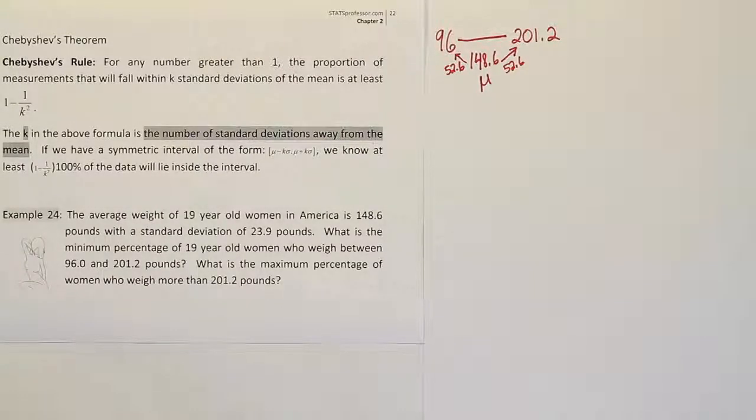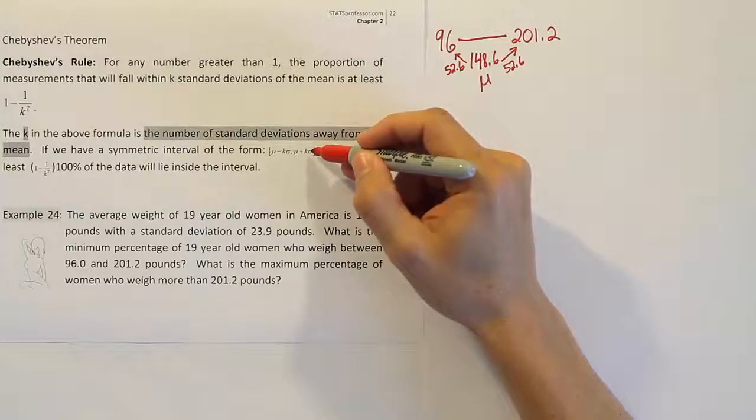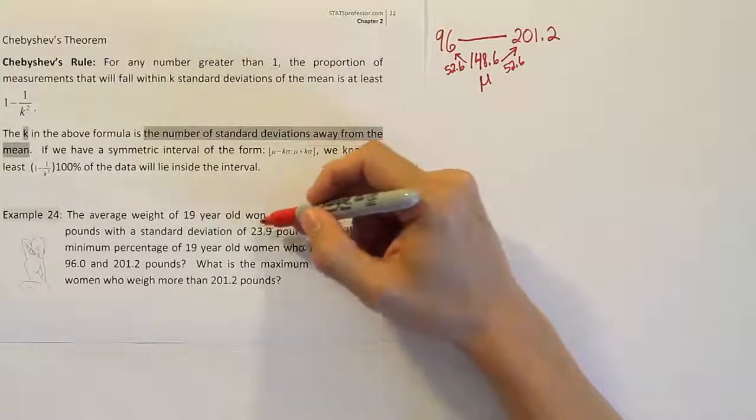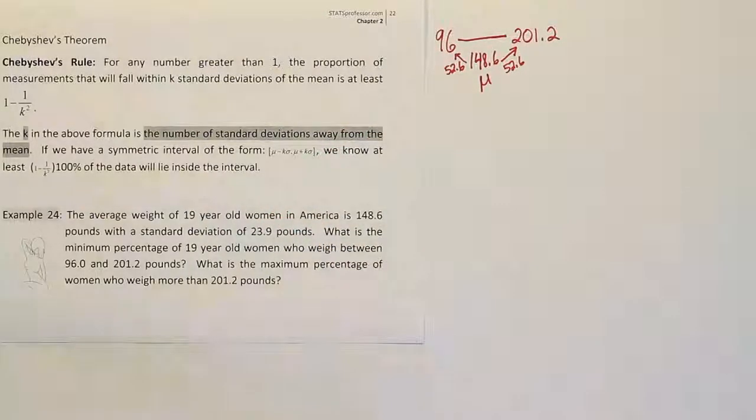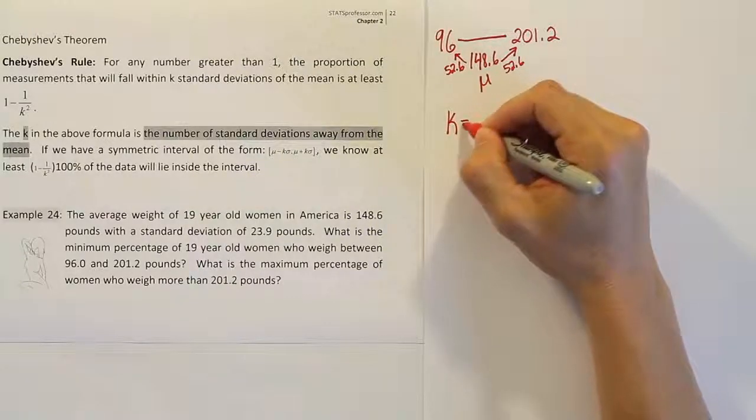So once we have that, then our next step is going to be able to figure out what the k is. Because you see, the way they created our interval is they did the mean plus k standard deviations. I know what the standard deviation is. It's 23.9 pounds. But I don't know what k is.